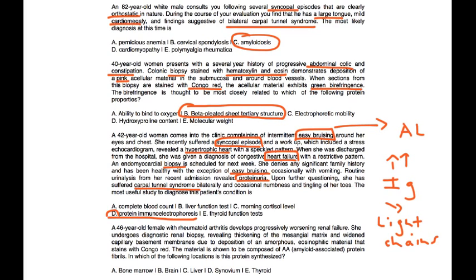And finally, a 46-year-old female with rheumatoid arthritis develops progressively worsening renal failure. She undergoes a diagnostic renal biopsy, revealing thickening of the mesangial matrix and widened capillary basement membranes due to the deposition of an amorphous eosinophilic material that stains with Congo Red. The material is shown to be composed of AA, amyloid-associated protein, fibrils. In which of the following locations is this protein synthesized? Well, if you remember earlier, the AA protein, also known as amyloid A, is produced in the liver. So that would be choice C.